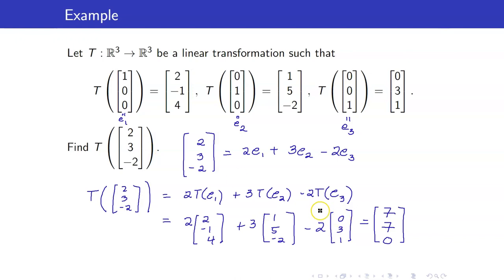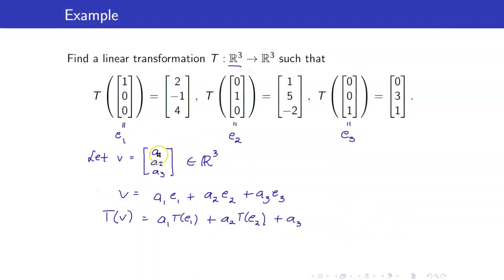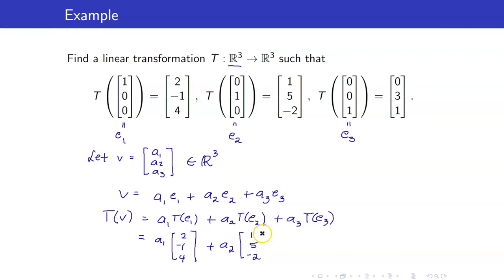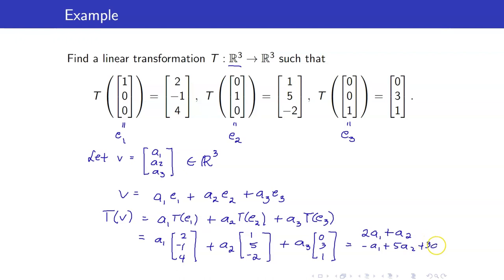Now we want to find the action of T on each vector in R3. So T of V is A1 times T of E1, which is (2, -1, 4), plus A2 times (1, 5, -2), plus A3 times (0, 3, 1). This equals (2A1 + A2, -A1 + 5A2 + 3A3, 4A1 - 2A2 + A3). This is now the action of T on an arbitrary vector V.